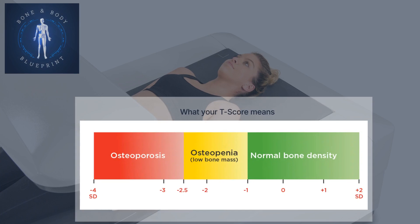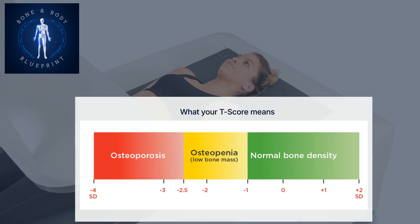Think of the T score like a traffic light. Green is normal, yellow is a warning that your bone density is low — called osteopenia — and red is osteoporosis, meaning action is needed.